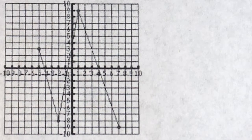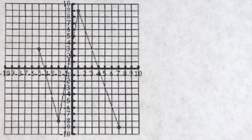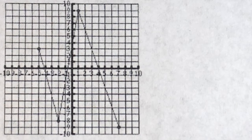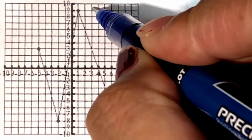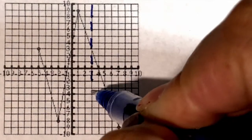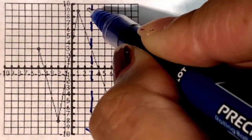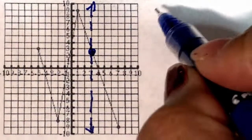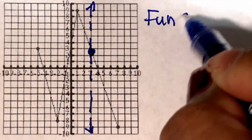Now let us determine if the graph is a function and state the domain and range. We will use a vertical line test. When a vertical line crosses the graph at exactly one point, it is a function. Drawing a dashed line, this line crosses the graph at exactly one point. Therefore, this is a function.